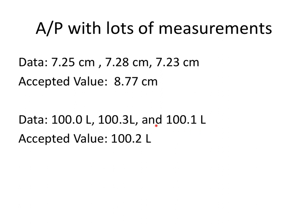Now if we look at this second data set, we have data point 1, data point 2, data point 3. If we look at the points relative to one another, we see that they are very precise. And if we compare them to the accepted value, they are also very close. So this data is actually both precise and accurate.